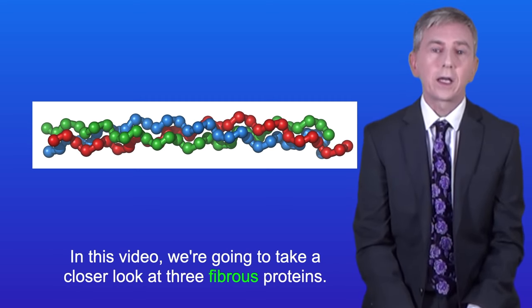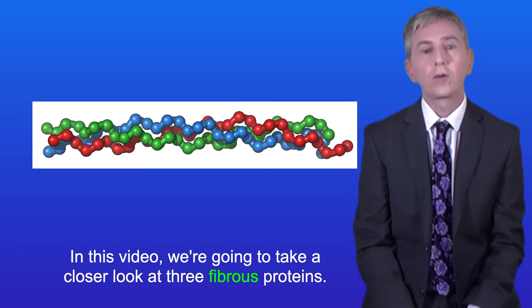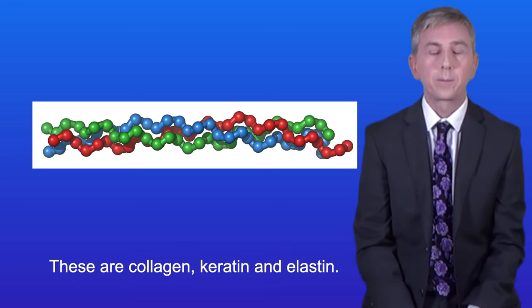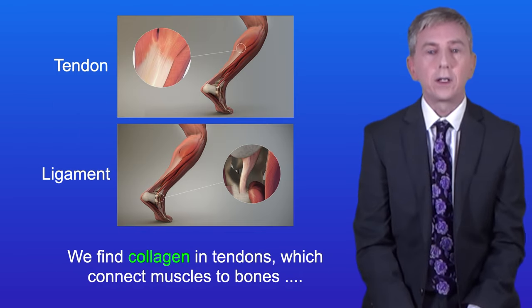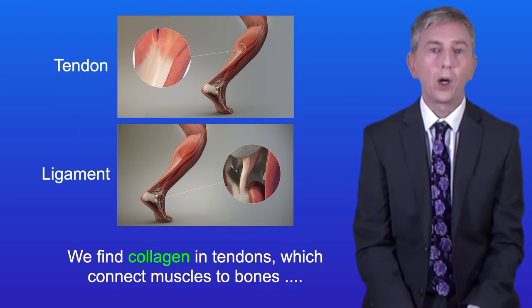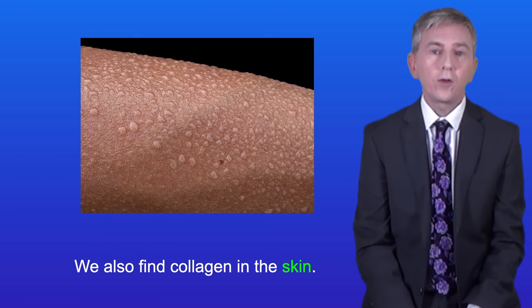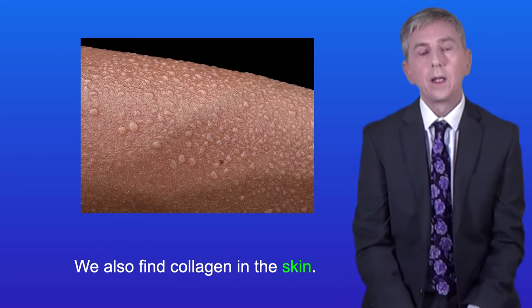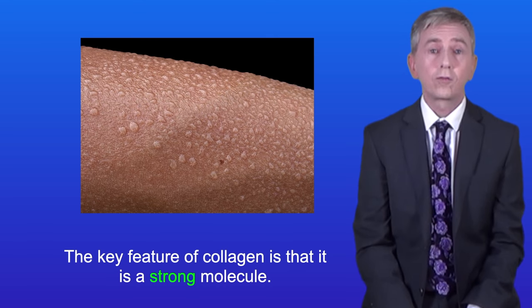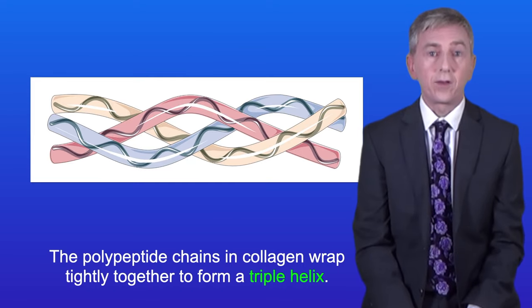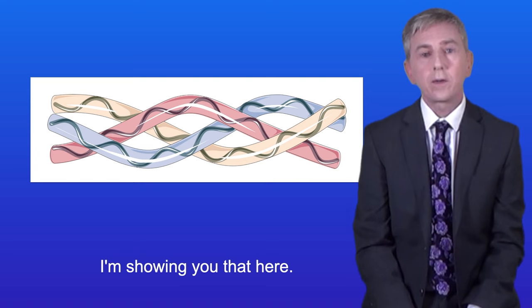In this video we're going to take a closer look at three fibrous proteins: collagen, keratin and elastin. We find collagen in tendons which connect muscles to bones, in ligaments which connect bones to each other, and also in the skin. The key feature of collagen is that it's a strong molecule, and this is due to its structure. The polypeptide chains in collagen wrap tightly together to form a triple helix, as shown here.